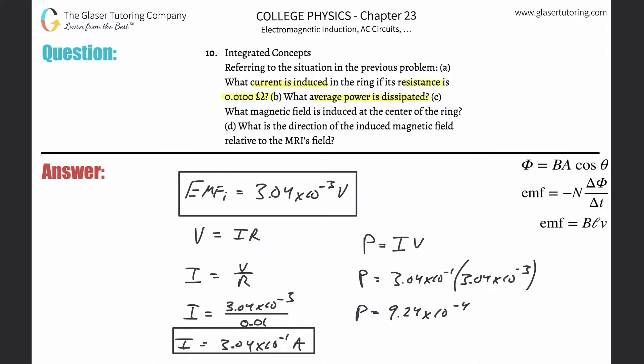And then let us see what magnetic field is induced at the center of the ring. So what we need to do is we got to go back to Chapter 22 and use some of those formulas.